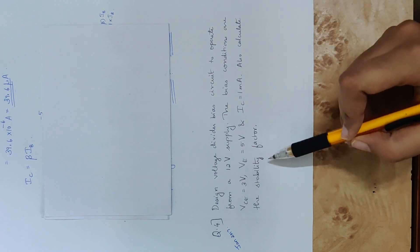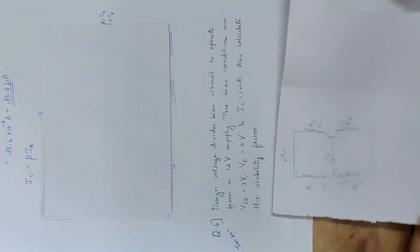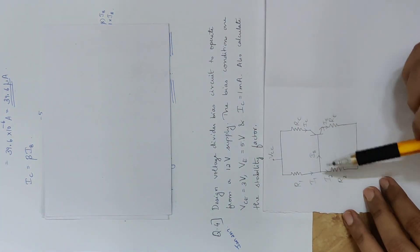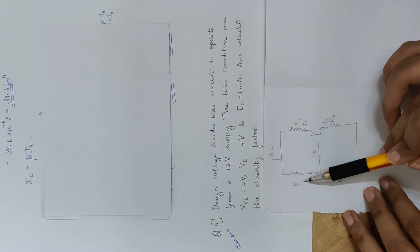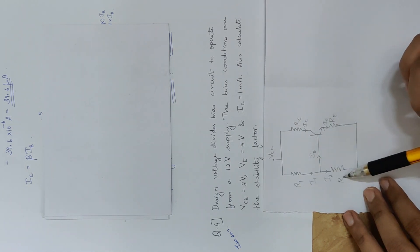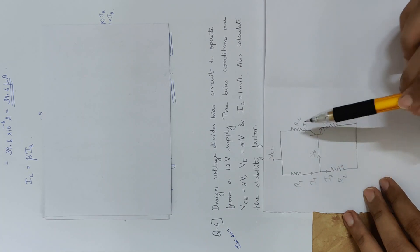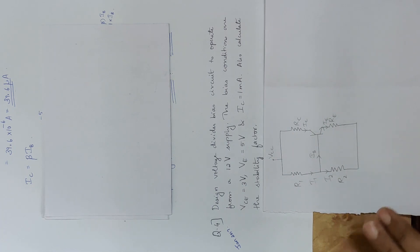Also calculate the stability factor. In this design of the voltage divider bias circuit, we need to find the values of elements R1, R2, RC, and RE.